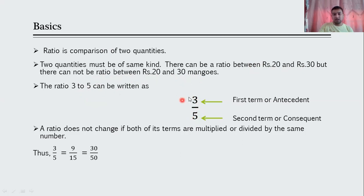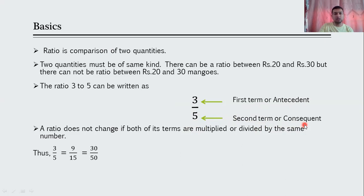In the ratio 3 upon 5, the number 3 is the first term or antecedent, and 5 is the second term or consequent. The ratio does not change if both its terms are multiplied or divided by the same number. For example, 3 upon 5 multiplied by 3 gives 9 upon 15, which is the same as 3 upon 5.